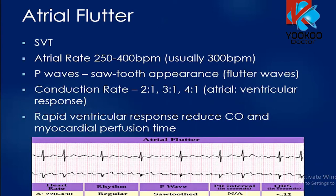Atrial flutter occurs when the atrial rate is between 250 to 400 beats per minute. The P waves have a sawtooth appearance — you can see flutter waves that look like the teeth of a saw. The conduction rate is usually in the form of 2:1, 3:1, or 4:1 depending on atrial and ventricular response. If the ventricular rate is rapid, it reduces cardiac output and myocardial perfusion.